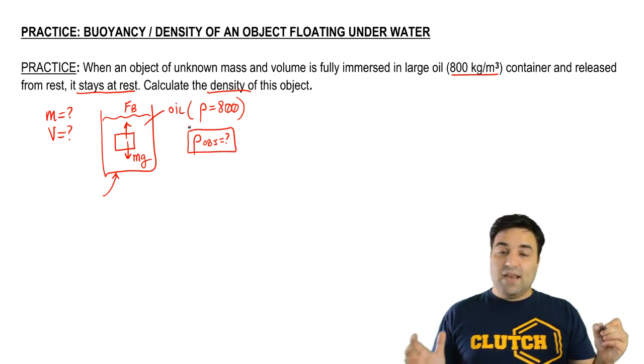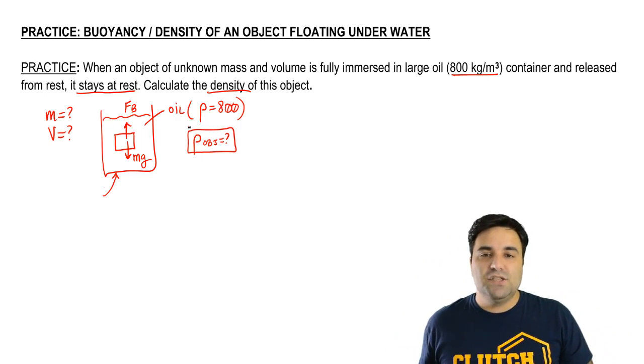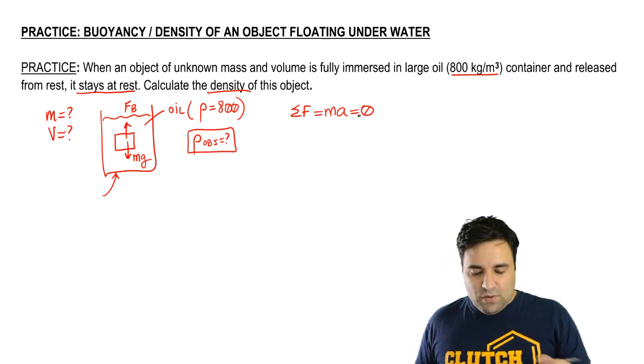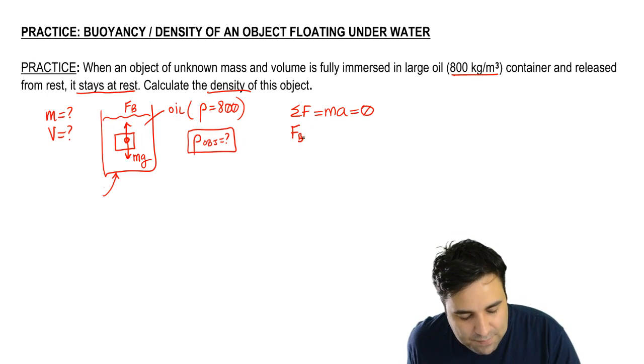So again, all of these questions are going to start with F equals MA equals zero because you are at equilibrium. The sum of all forces equals MA. And that's just zero because it doesn't move. And what that means is that the forces just cancel. So you can immediately write that FB going up is going to equal MG going down.